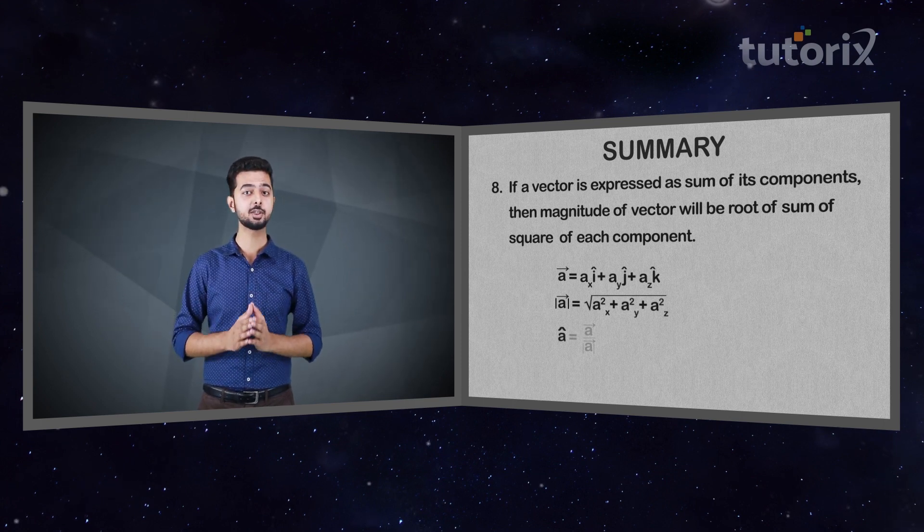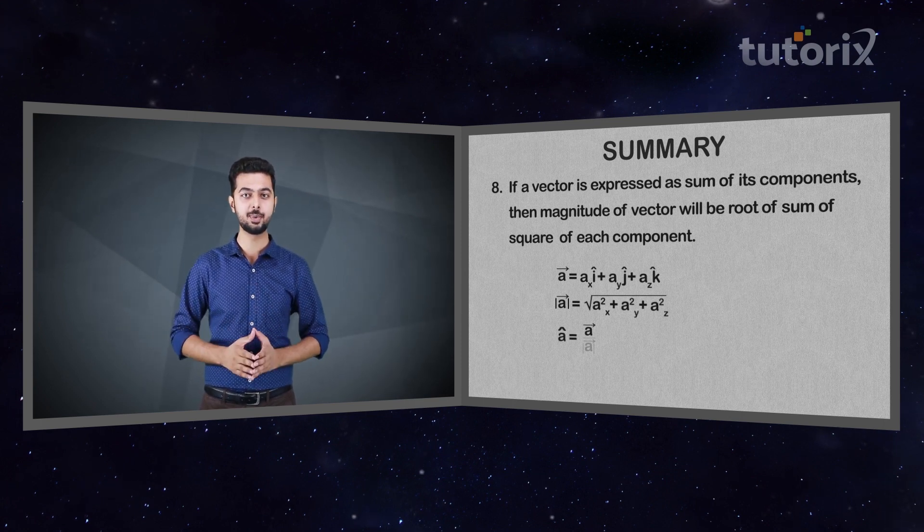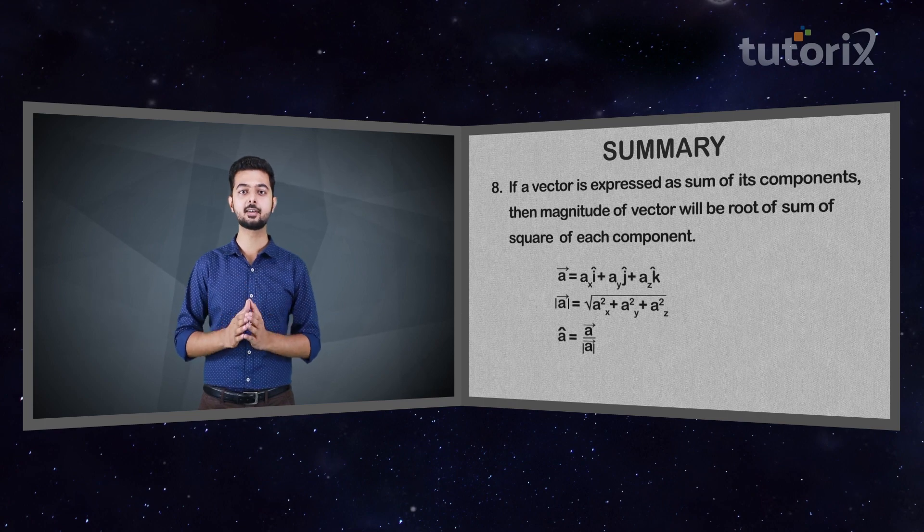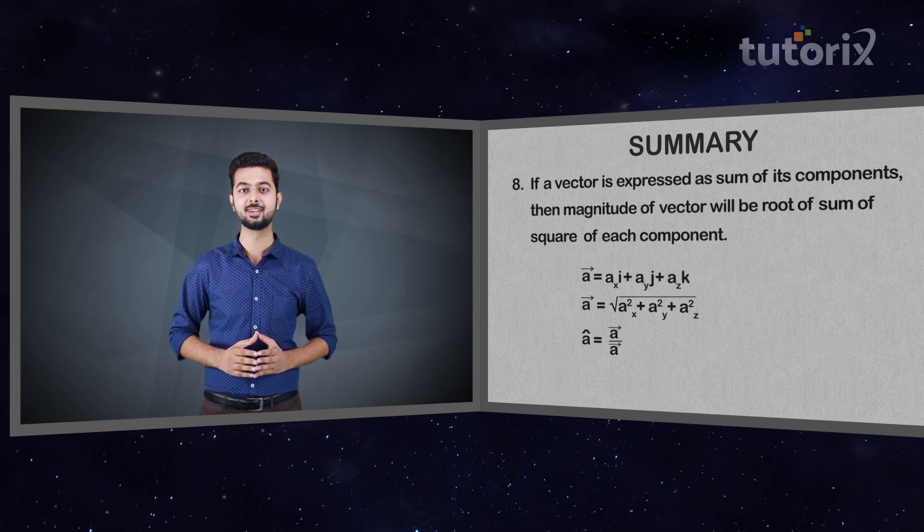The direction of a vector is found by dividing the vector by its magnitude. In this video, we learned how to resolve a vector into its components. In the next video, we will learn about vector multiplication. Till then, keep revising.